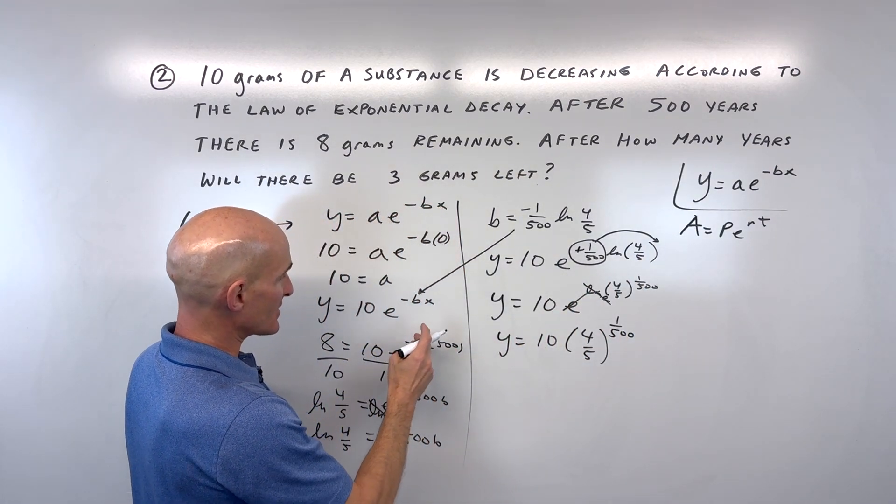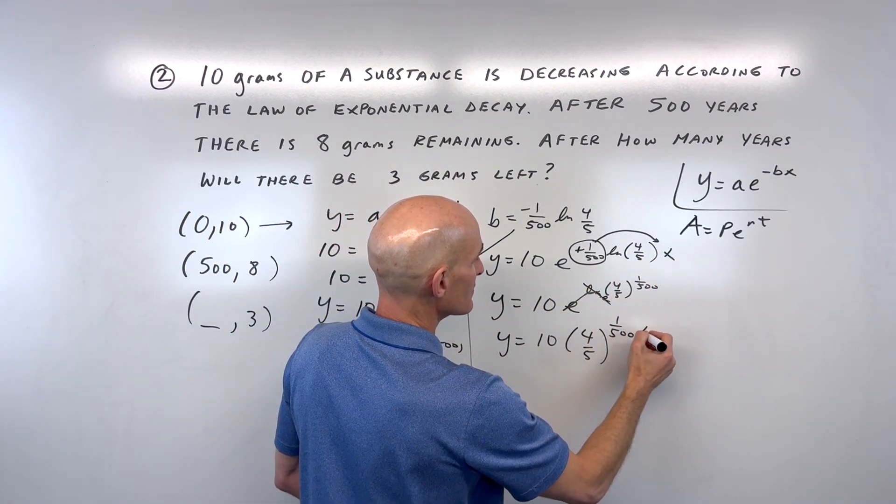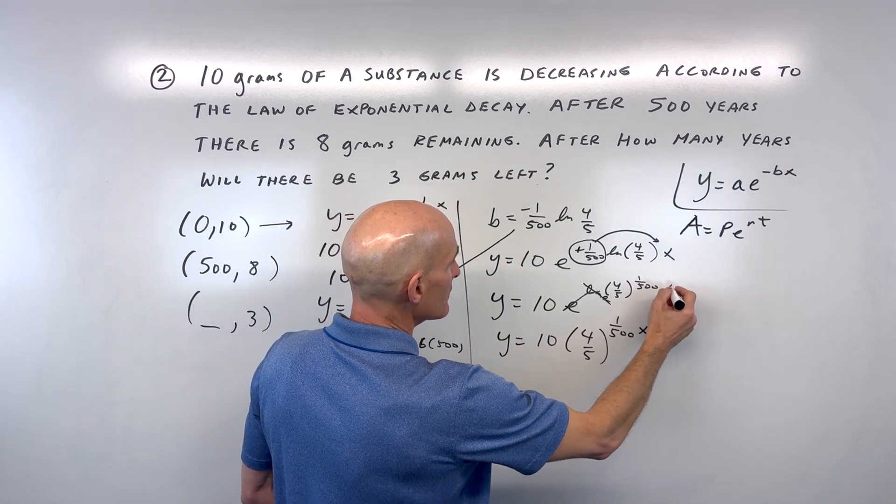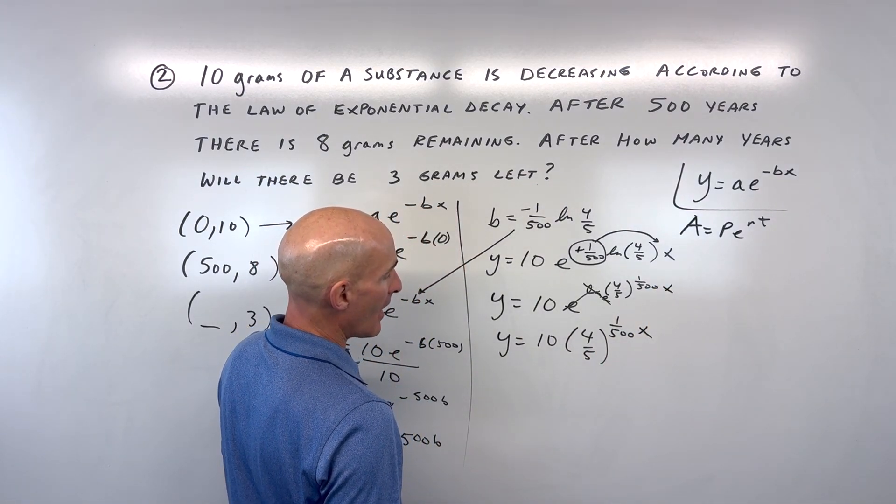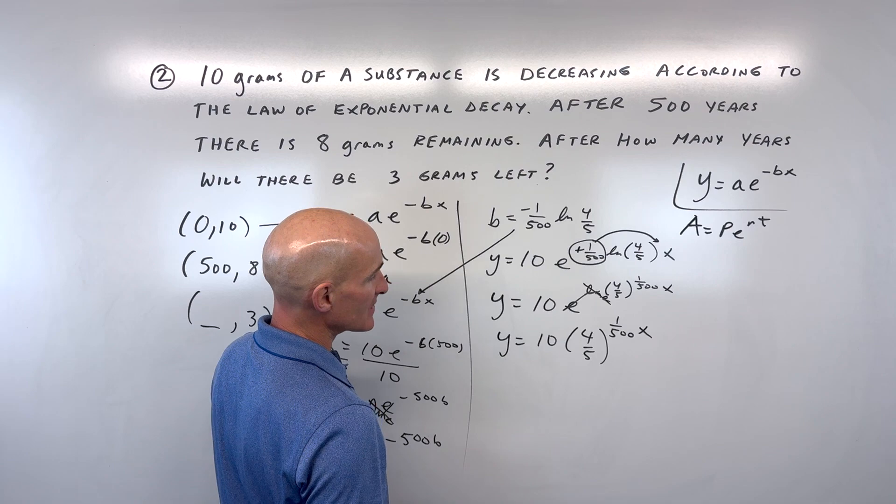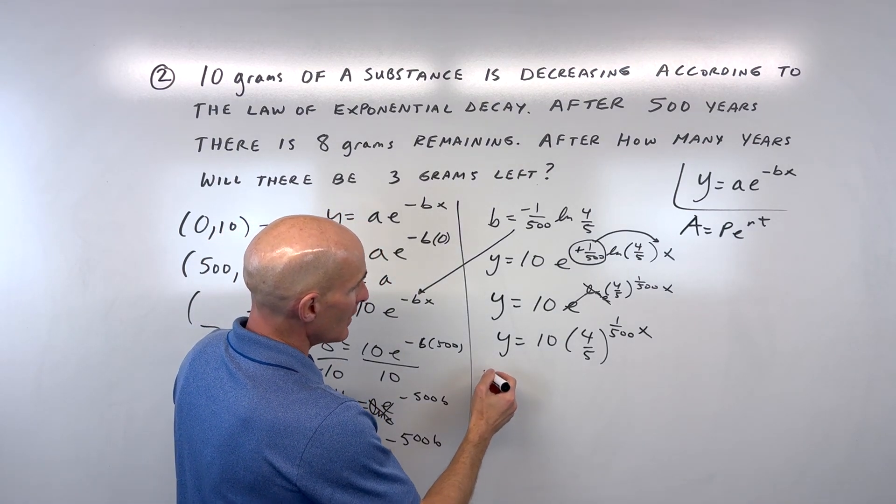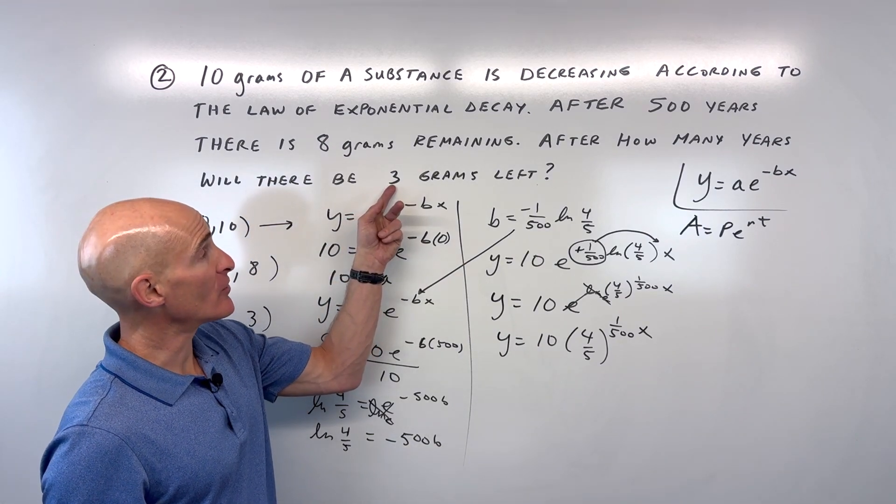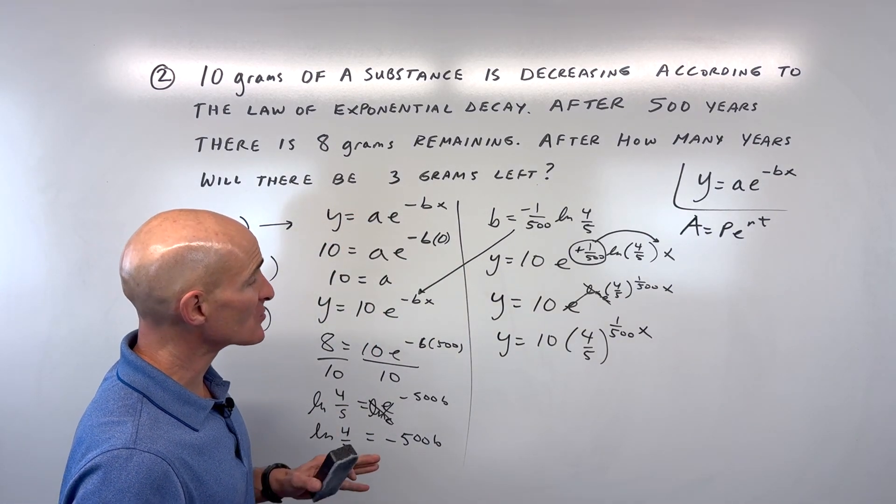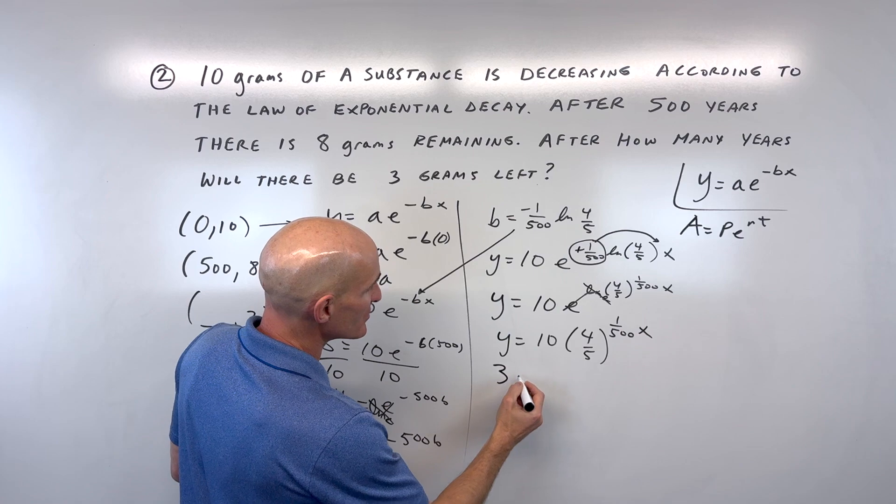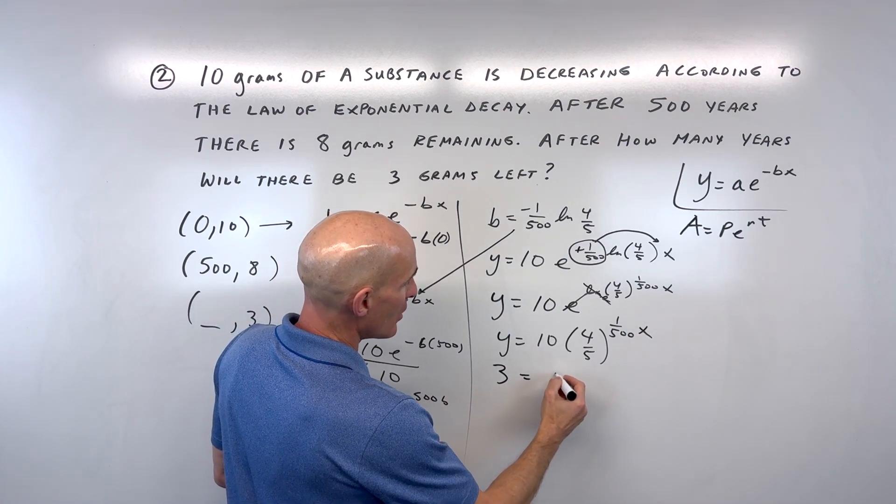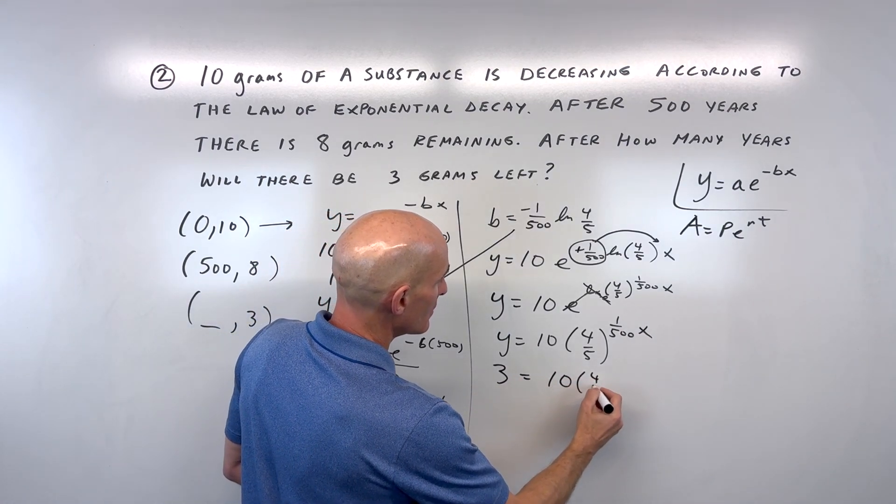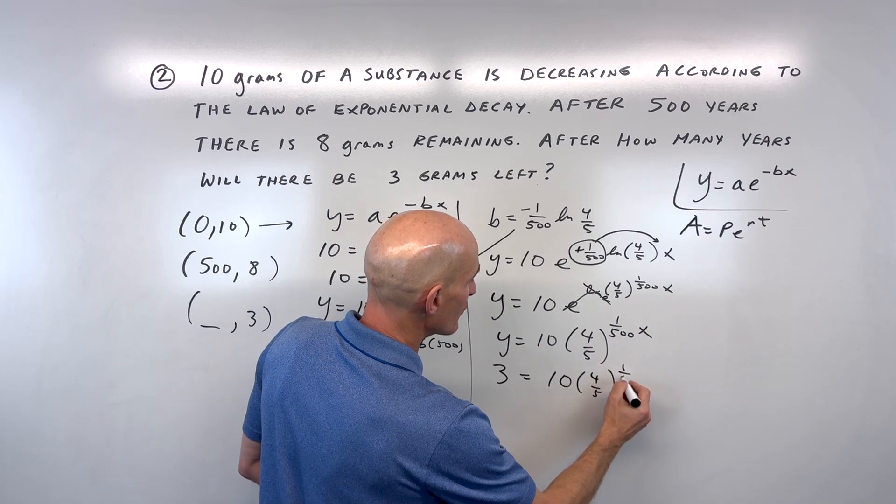Natural log and e are inverses, so we get y equals 10 times 4 fifths to the 1 over 500 times x. That's our equation. We want to know how many years it will take for there to be 3 grams of this substance left. So when y equals 3, how do we solve for x?